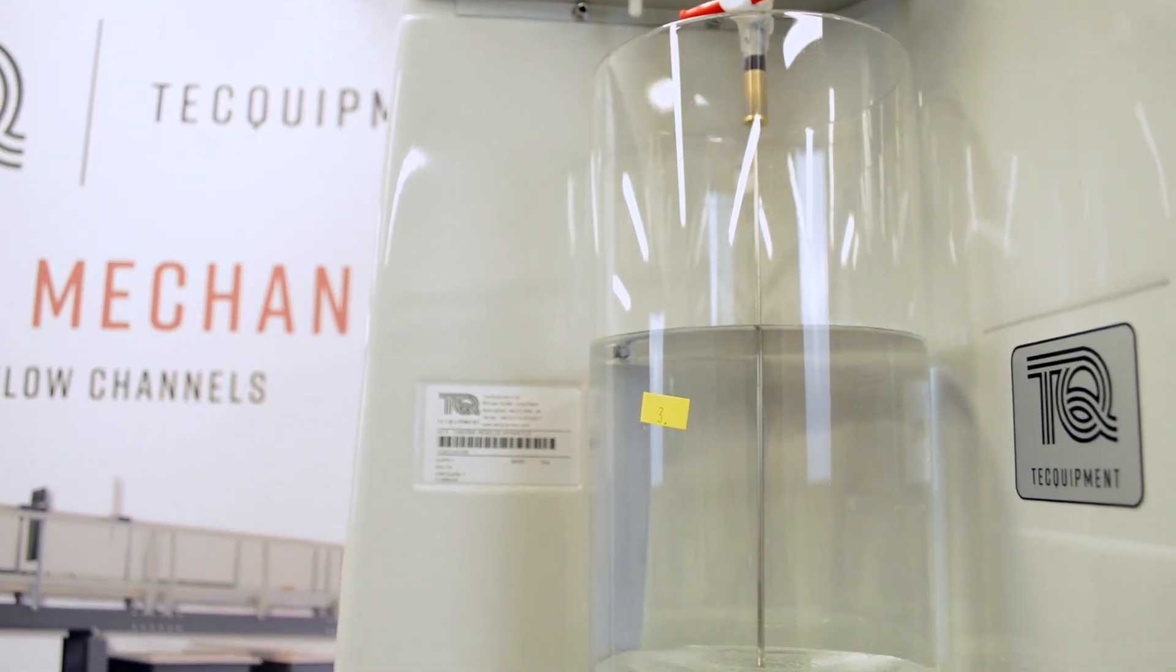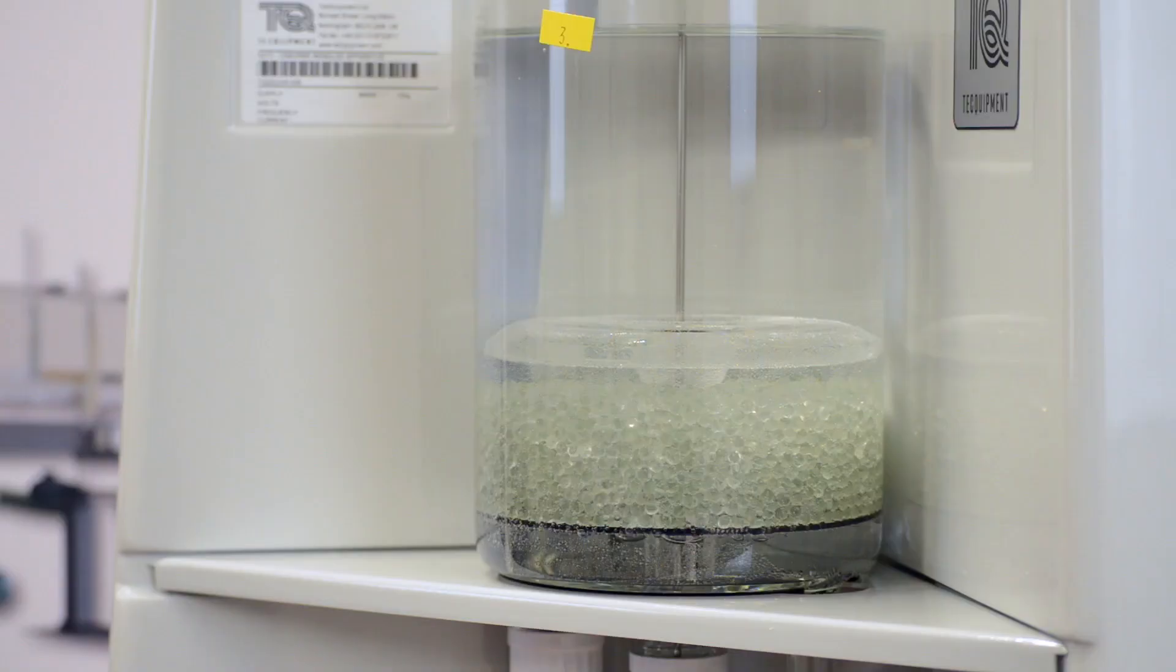At the top is a glass constant head tank. This holds water that passes into the main tube through this bell mouth entry here. The high quality glass composition allows optimum viewing of flow behaviours.